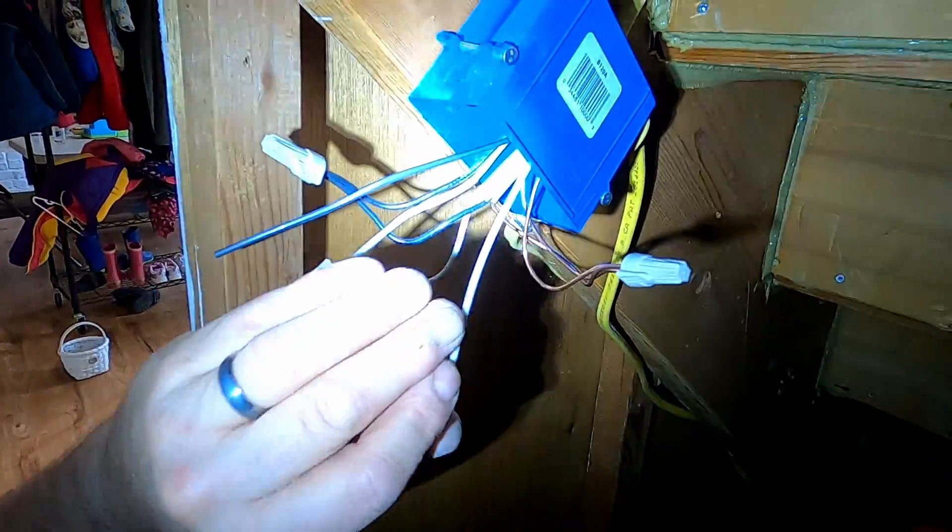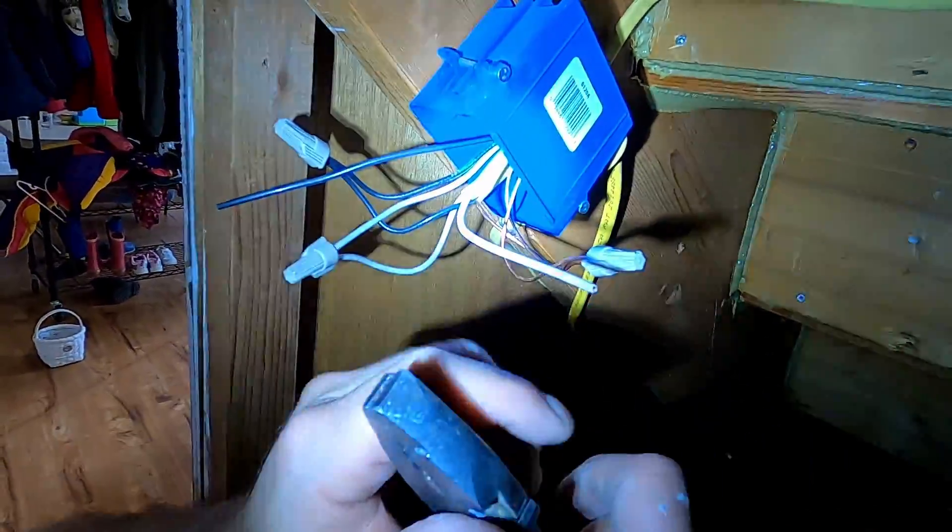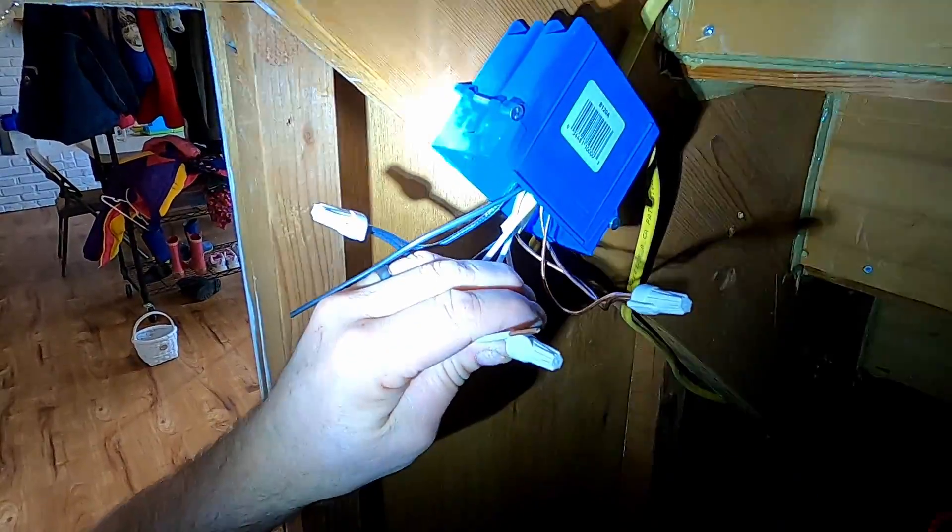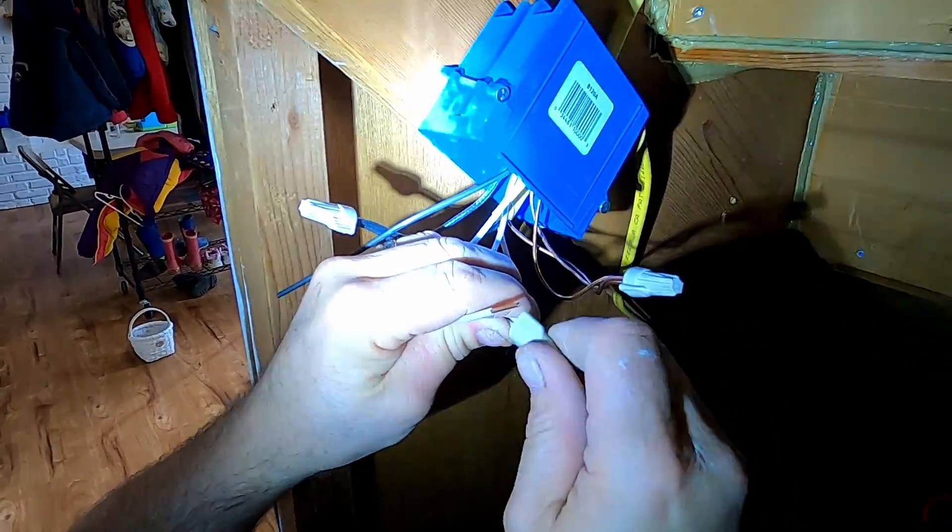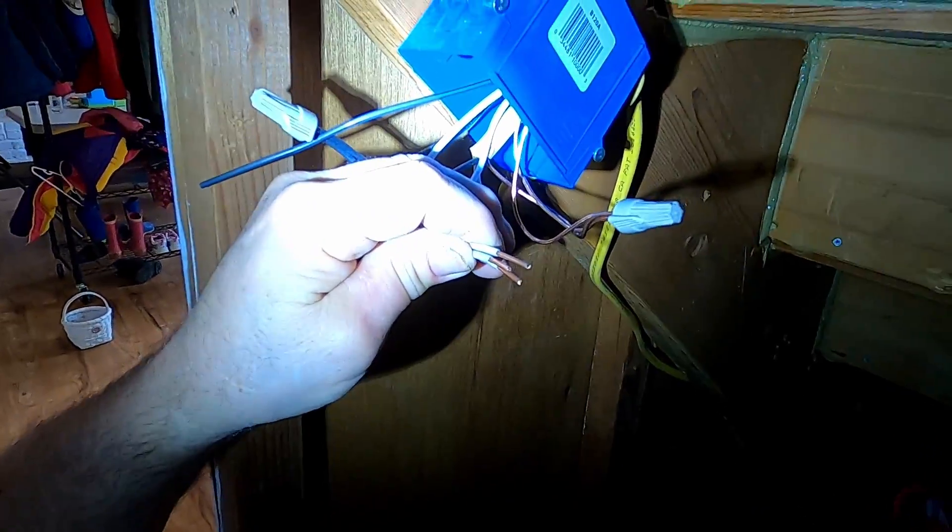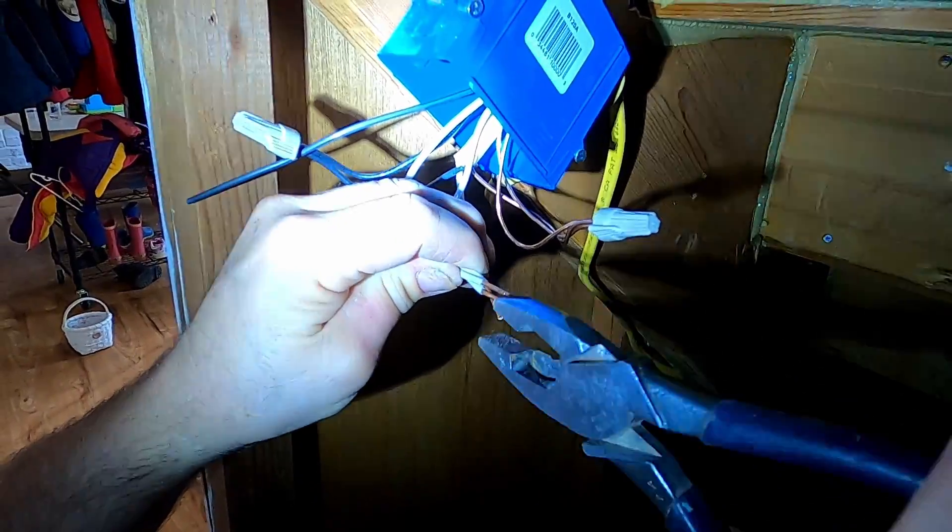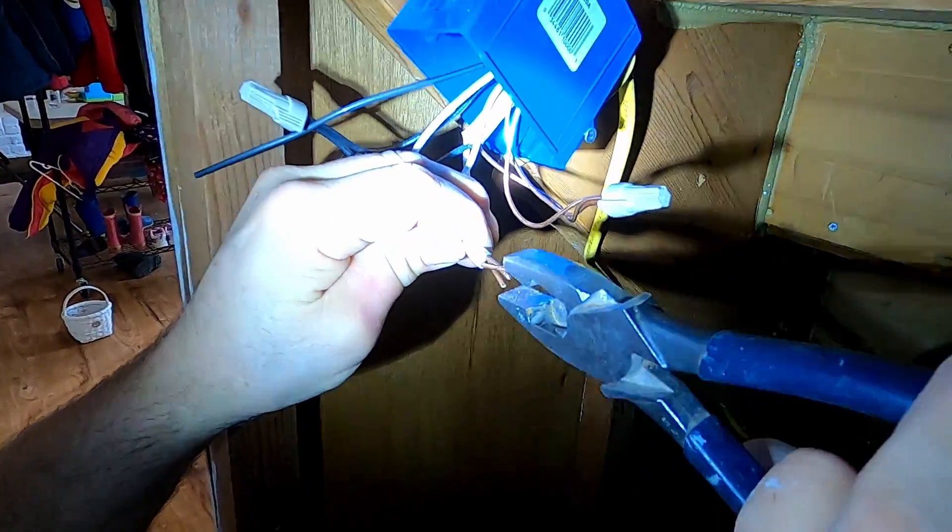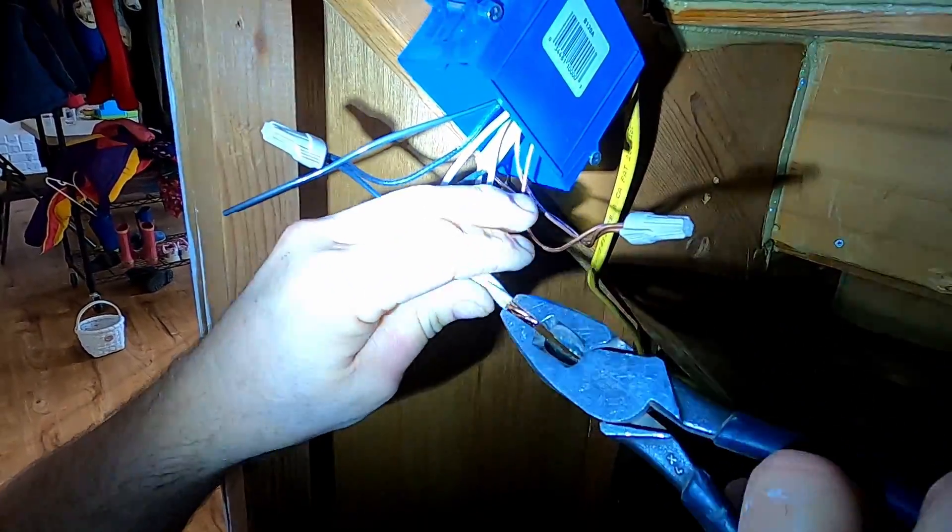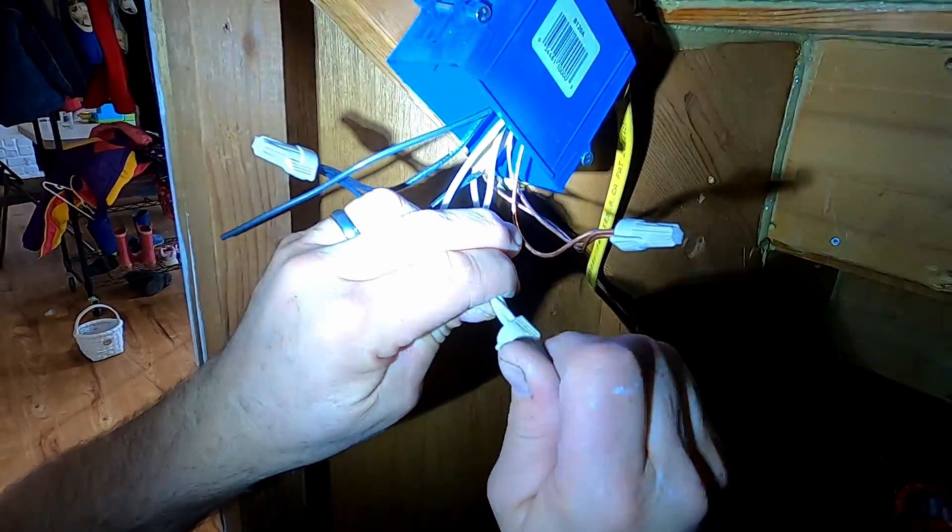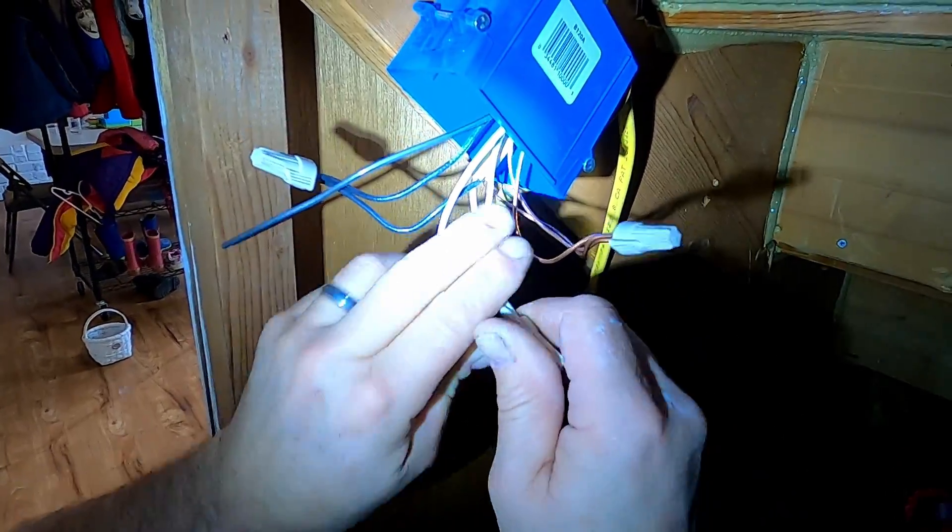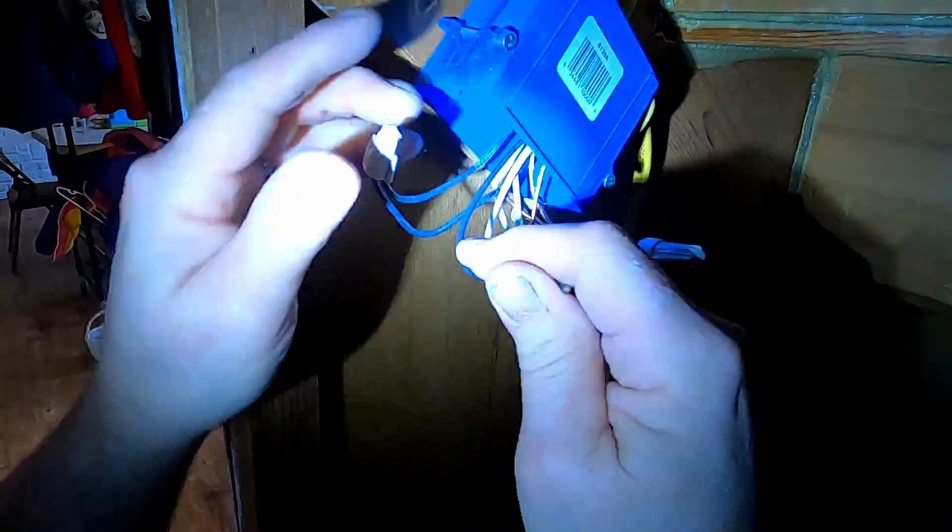Next, we're going to wire up the neutrals which is the white wire. We're going to wire these together. I'm going to twist them to make sure they're really put together correctly and they're not going to slip out.